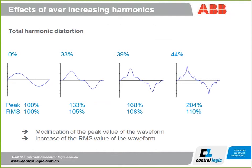This slide shows harmonic distortion and how varying levels of current harmonic distortion affect the current waveform. With no harmonic distortion, peak and RMS values are as expected. As distortion increases, two things happen: the peak value increases and the RMS value of the fundamental also increases. At 44% distortion, the RMS current has gone from 100% to 110%. So cabling, transformers, or MCC bus bars not sized to account for harmonics can experience very negative effects in terms of heating.